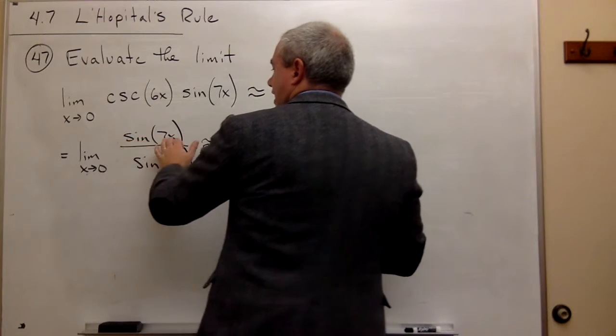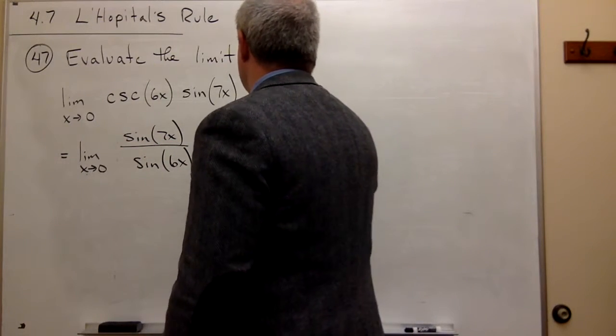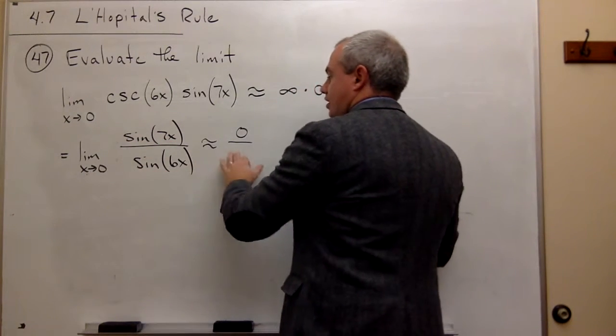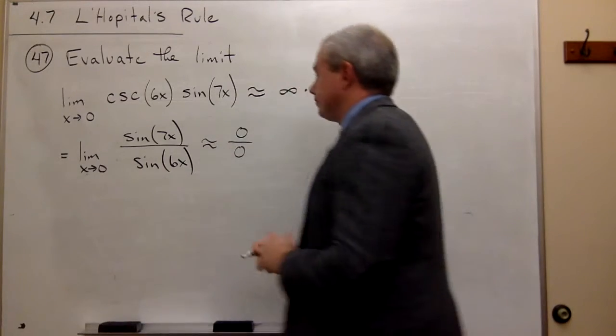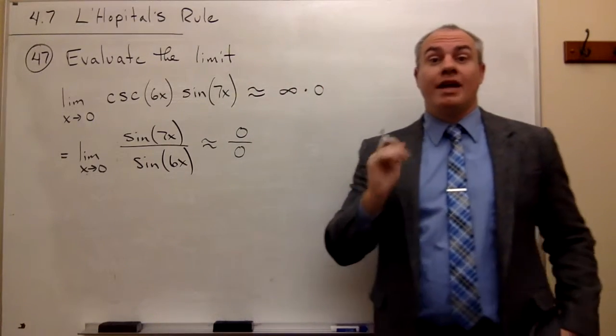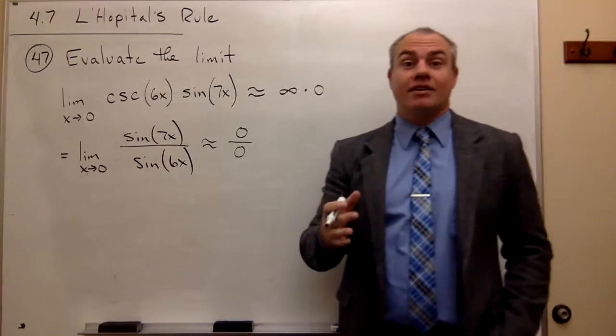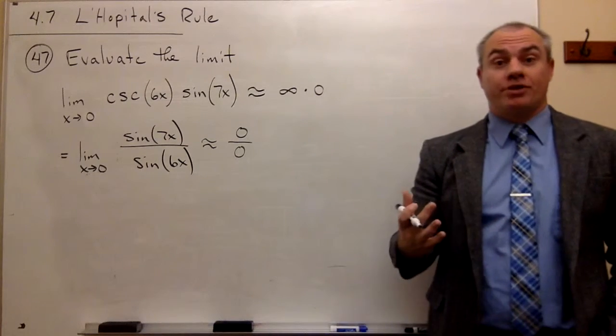Well on top I've got sine of 0 which is 0, and on bottom I've got sine of 0 which is 0. So my form is 0 over 0, and as we know that's exactly what we need in order to use L'Hopital's rule.